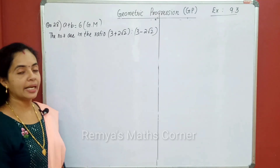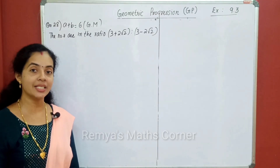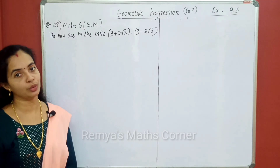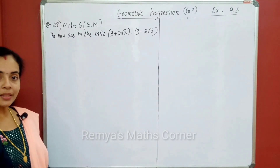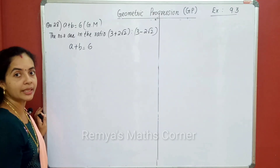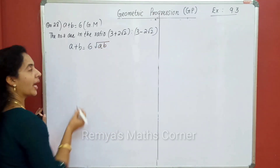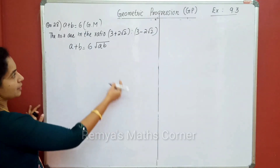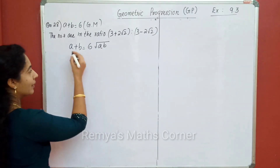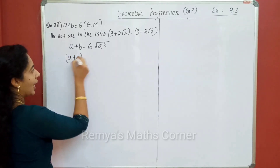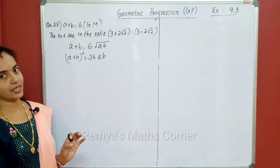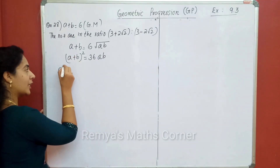28th question: two numbers in the sum. That is the geometric mean of 6 times. That is, the numbers are in the ratio of 3 plus 2 root 2 is to 3 minus 2 root 2. If we say the 2 numbers are a and b, this is a plus b, the geometric mean of a and b is root ab — this is 6 times. So, a plus b equals 6 root ab. If we square both sides: a plus b the whole square equals 36ab.